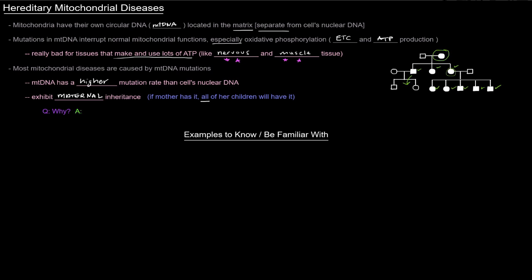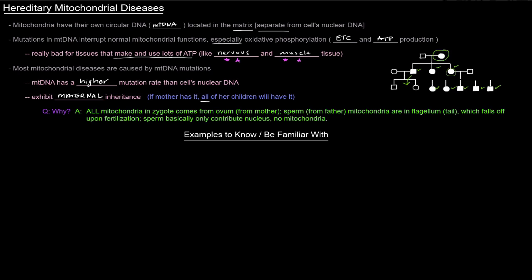Well, it's because all the mitochondria in a zygote comes from the ovum, which of course is coming from the mother. Sperm mitochondria, which of course come from the father, are in the flagellum or the tail of the sperm, which actually falls off during or upon fertilization.